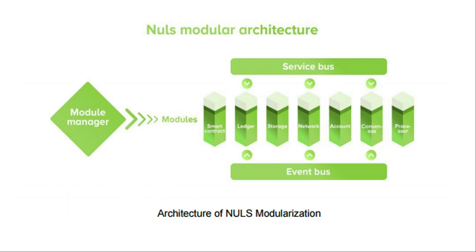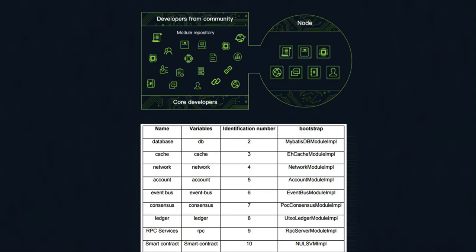When you first build on NAUS, you won't have to create your own modules from scratch. The team already has a library of modules that people can choose from. For example, they'll have a module for proof of work and one for proof of stake — you just choose whichever consensus algorithm module you want and plug it into your project. This is why developers don't need to learn cryptographic-specific technology to build a dApp. They just need to know how to use it — plug and play.